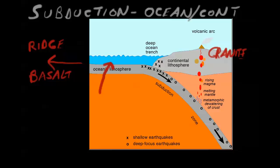As the ocean plate dives underneath and you go deeper into the earth's crust, you get down to the asthenosphere. The solid crust starts to melt, and when it melts into the mantle it becomes less dense, so it works its way up looking for cracks in the continental crust. When it finds these cracks, the magma rises through and forms volcanoes.